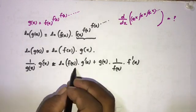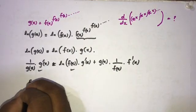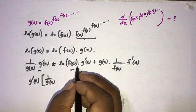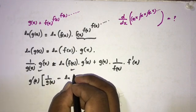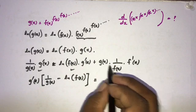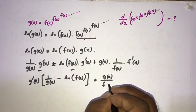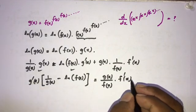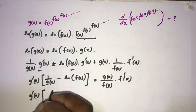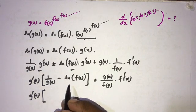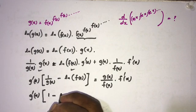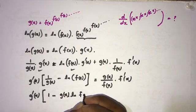Now I'm going to take g'(x) as a common factor from both terms. So g'(x) times (one over g of x minus natural log of f of x) is equal to g of x over f of x times f'(x). Rearranging, we get the factor (1 minus g of x times natural log of f of x) on one side.